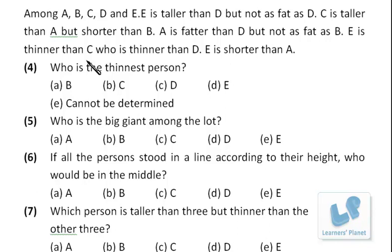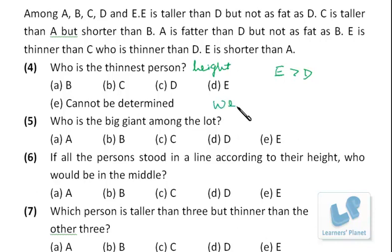Now we have four questions based on this information. There are two comparisons — one is height and the other is weight (fatness). We have to arrange five persons A, B, C, D, E on both scales. E is taller than D. I arrange height on one side and weight on the other. E is taller than D but not as fat as D, meaning D is fatter than E.